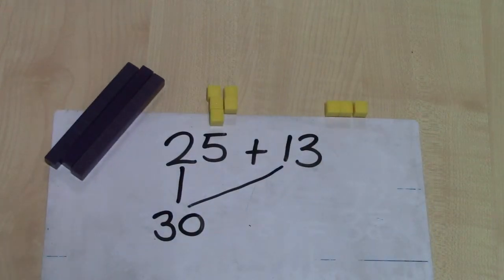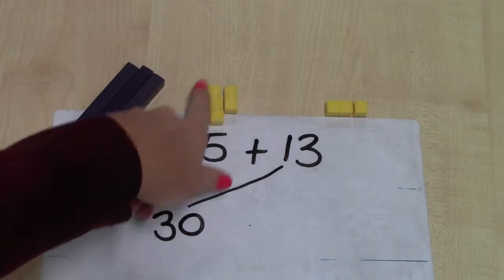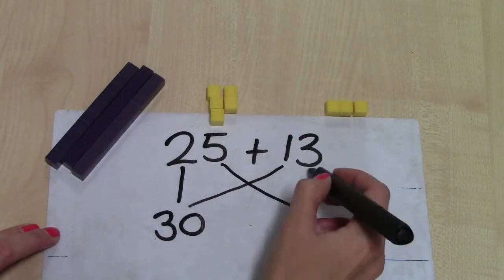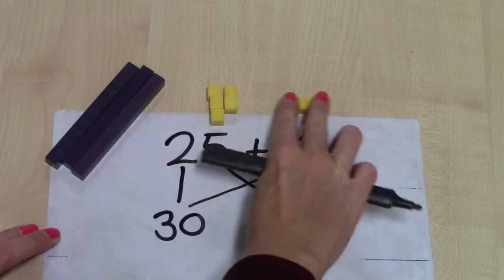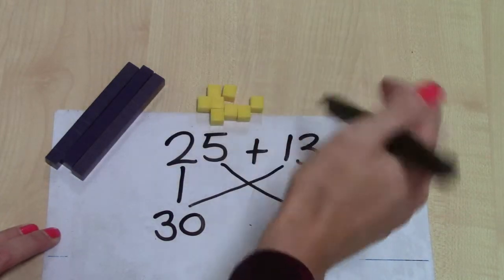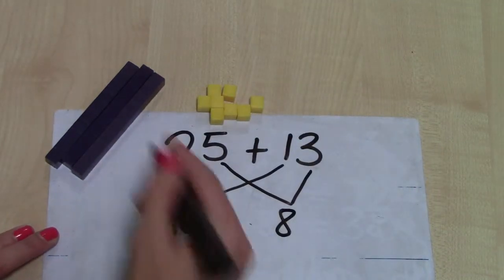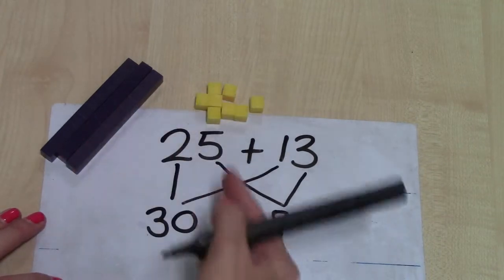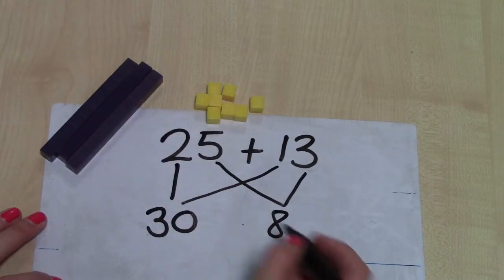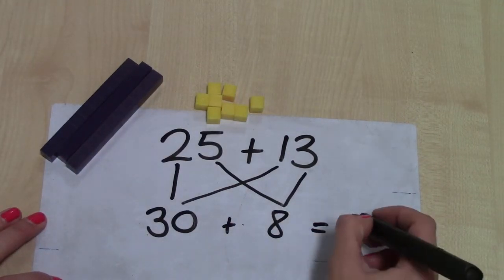Now I'm going to add my five units to my three units. So five add three gives me eight. So altogether I've got 30. I've got three tens and eight units, which gives me 38.